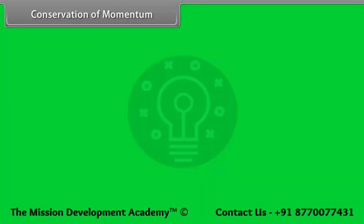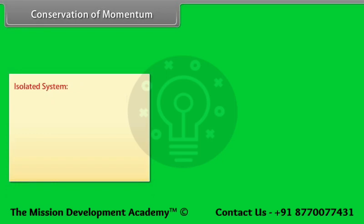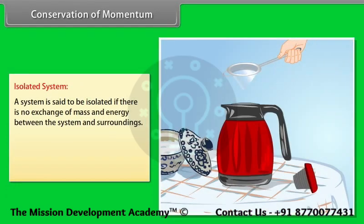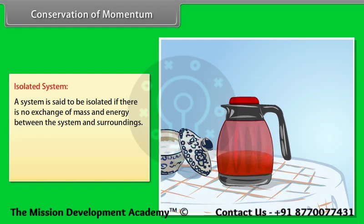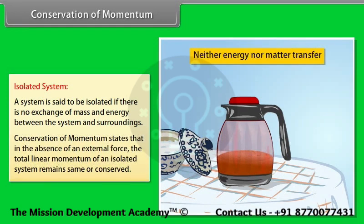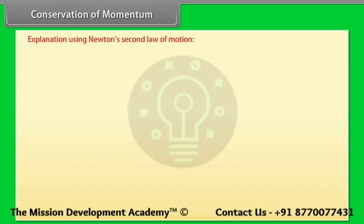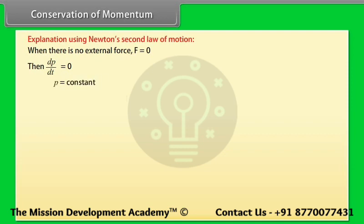Conservation of momentum: An isolated system is one where there is no exchange of mass and energy between the system and surroundings. Conservation of momentum states that in the absence of an external force, the total linear momentum of an isolated system remains the same or conserved. Using Newton's second law: when F = 0, dP/dt = 0, so P = constant, meaning MV = constant, and M1V1 = M2V2.